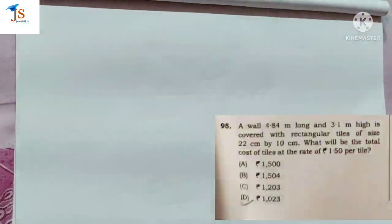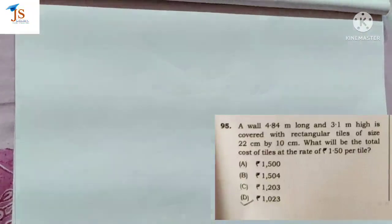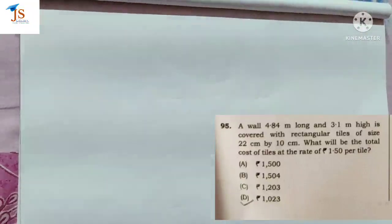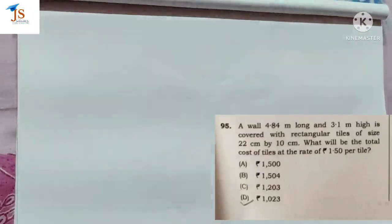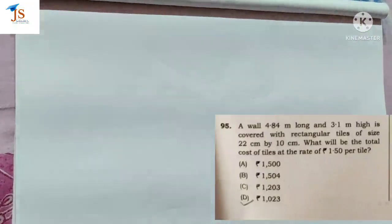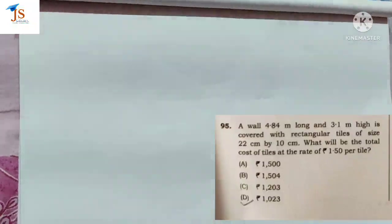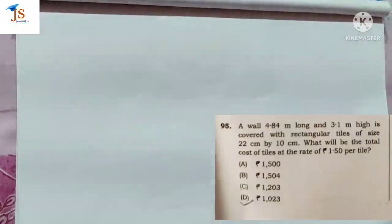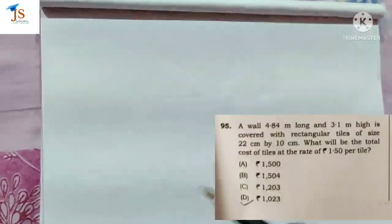Next question: a wall 4.84 meters long and 3.1 meters high is covered with rectangular tiles of size 22 cm by 10 cm. What will be the total cost of tiles at the rate of 1.50 per tile?